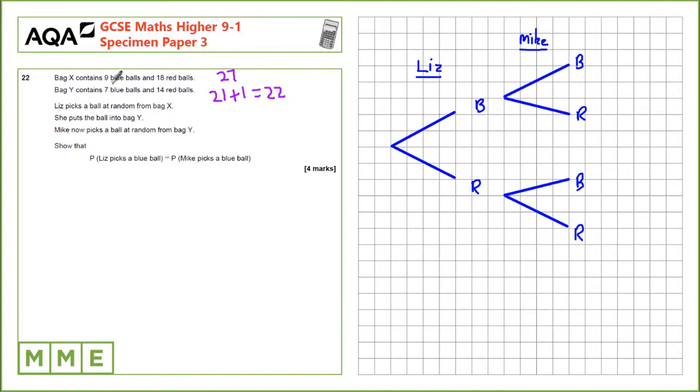Next the probability that Liz picks a blue ball is 9 over 27, and then the probability that she doesn't do that is 18 over 27. So we put that here because that's the probability of taking a red ball.